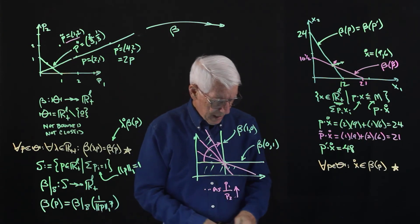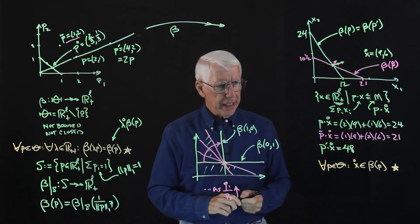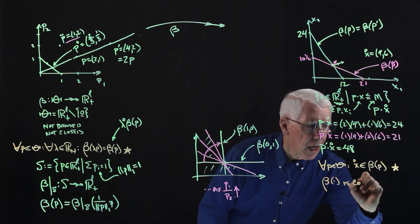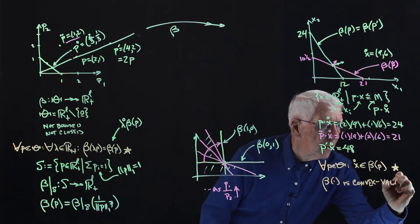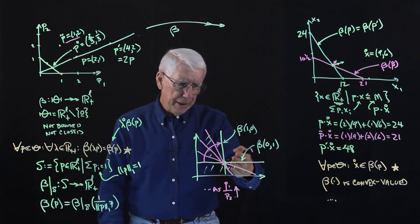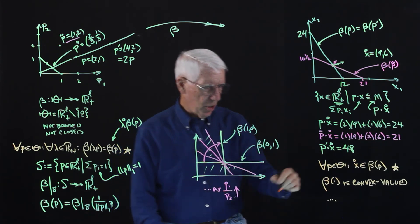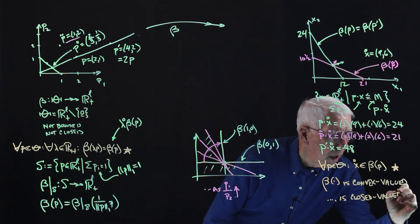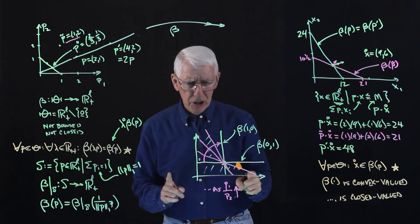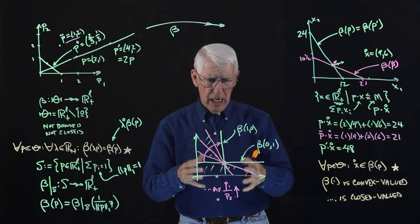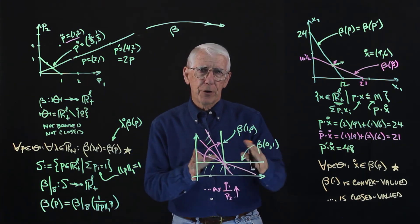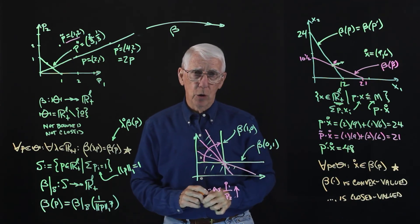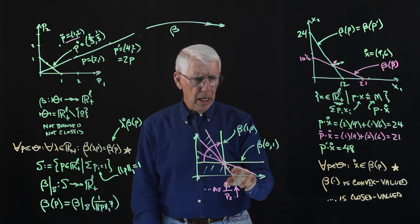Finally, let's note that the budget set is always a convex set — so the budget correspondence is convex-valued. And it's easy to see that the budget set will always be a closed set, so the budget correspondence is also closed-valued. There are other properties we can develop, but they are all related to the continuity of the budget correspondence, which we'll defer to our next lecture. So that's what we'll do next time — see you all then.